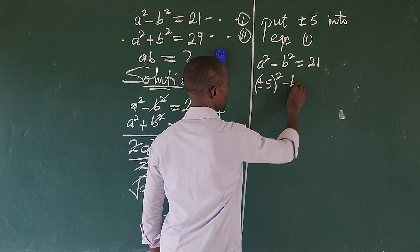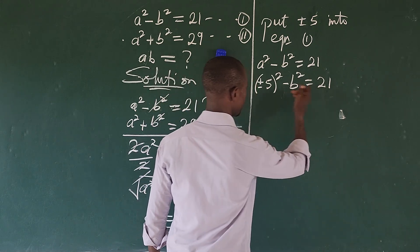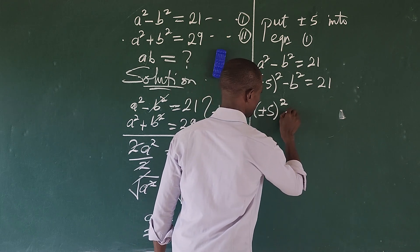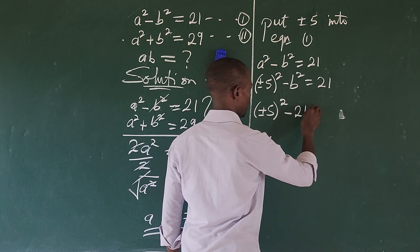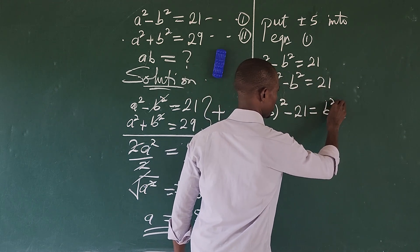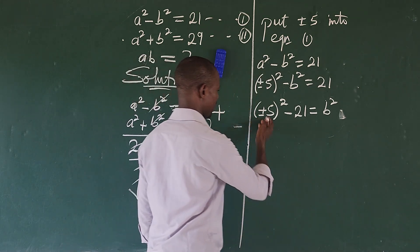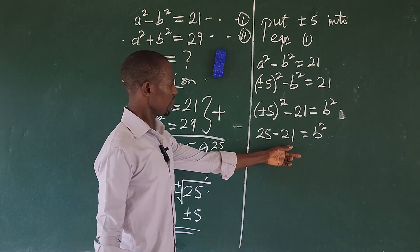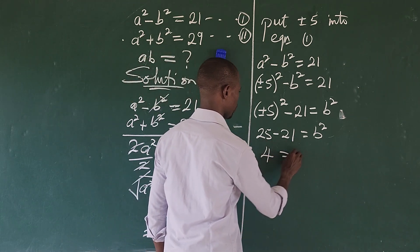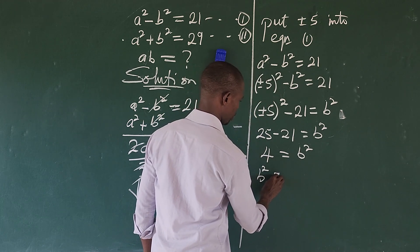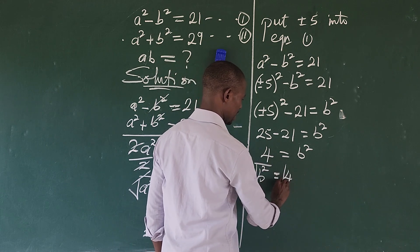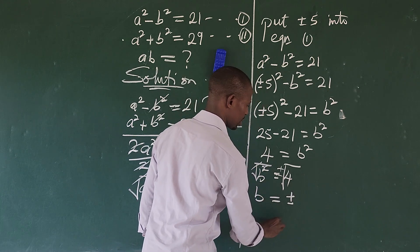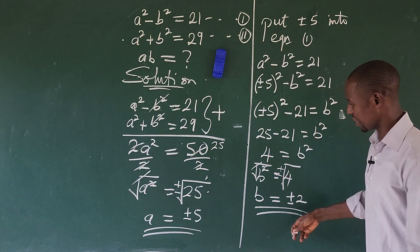Substituting: (±5) squared minus b squared equals 21. Rearranging, we get (±5) squared minus 21 equals b squared, which gives us 25 minus 21 equals b squared, so b squared equals 4. Taking the square root of both sides, introducing plus-or-minus, we get b equals plus or minus 2.